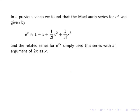In a previous video we found that the Maclaurin series for e to the x was given by 1 plus x plus x squared over 2 factorial plus x cubed over 3 factorial. And the related series for e to the 2x simply used this series for e to the x with an argument of 2x as x, i.e. we replace the x in the series with 2x.